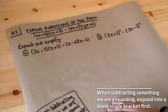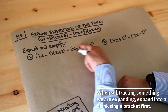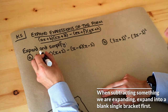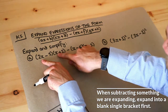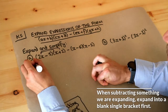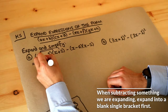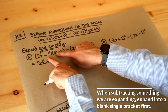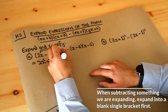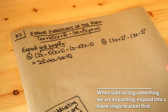Let's apply it to this expression. We can expand the first part first and worry about what we're subtracting later. To expand two brackets, we do each thing in the first bracket multiplied by each thing in the second. So 2x times x is 2x squared, 2x times 2 is plus 4x, then minus 5 times x is minus 5x, and minus 5 times 2 is minus 10.